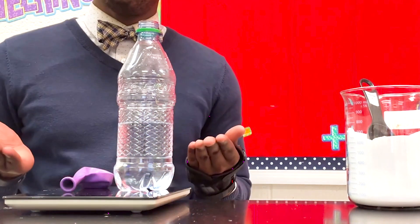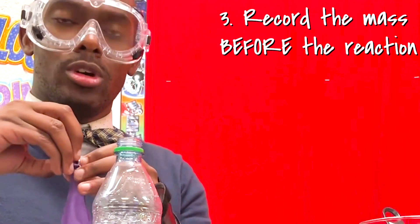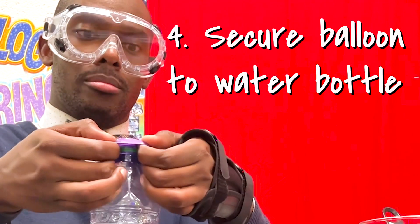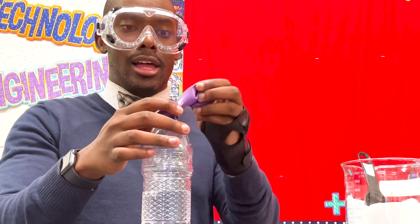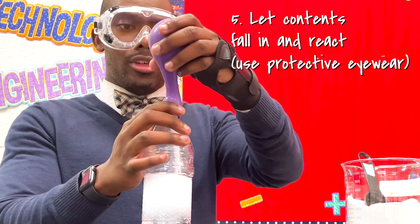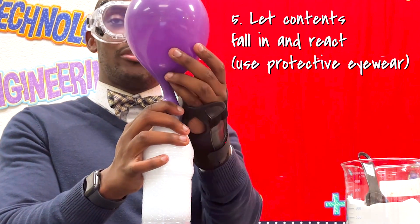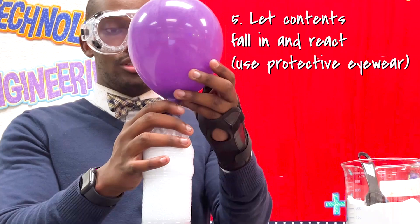Put the half-filled water bottle and the balloon with the crushed Alka-Seltzer onto the scale, read it, and record your mass. Then you want to secure your balloon onto the top of the bottle. Be careful, make sure it does not fall in. Then let the Alka-Seltzer react with the water. Please use protective eyewear if you have it.